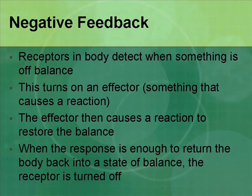Until the balance is restored, the receptors will keep signaling effectors — if it's off balance, those receptors keep signaling effectors until the balance is restored. That's why it's called negative feedback: it's something being wrong that triggers it, not everything being right. And that's it for homeostasis.